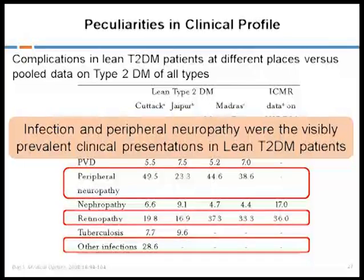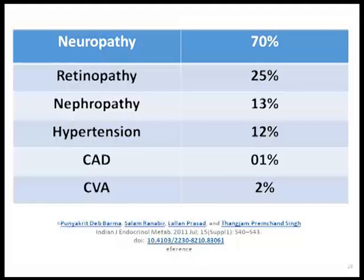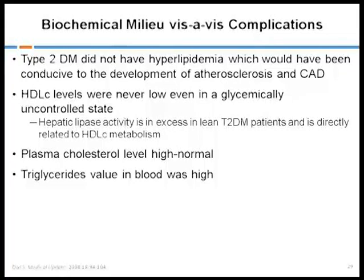Regarding the clinical complication profile, neuropathy dominates all presentations in lean type 2 diabetics. In a study of 100 patients, neuropathy was seen in 70 percent, followed by retinopathy and nephropathy, while macrovascular complications such as coronary artery disease and cerebrovascular accidents were only one to two percent. So macrovascular disease complications are very rare in lean diabetics — it is microvascular complications, infection, retinopathy, and neuropathy which dominate. These lean type 2 diabetic patients also have increased hepatic lipase activity; total cholesterol and triglycerides are on the higher side, but HDL is never low — it is normal or slightly elevated, which probably confers protection from macrovascular disease.